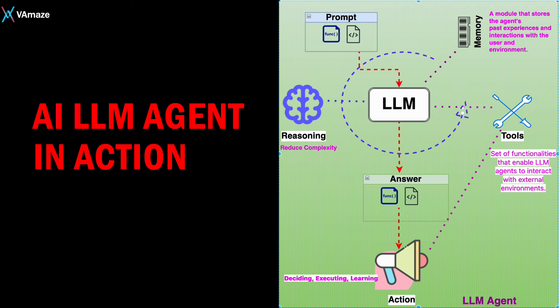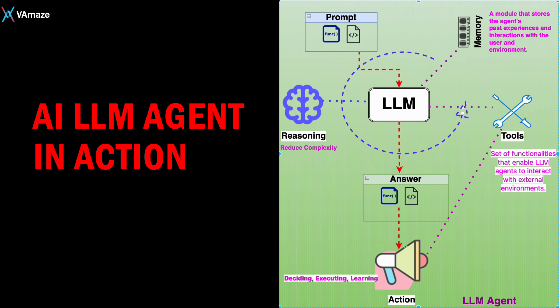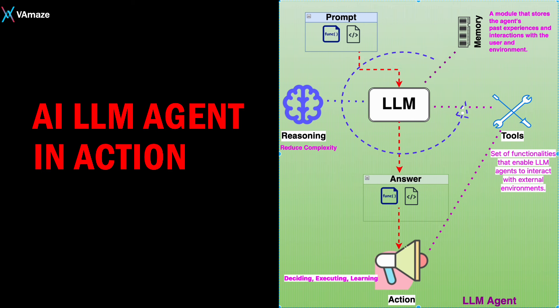Memory is also a key component. Agents have dynamic memory storage that captures conversational history, learned facts, and episodic experiences over time. This persistent memory enhances contextual awareness and enables continuous learning.